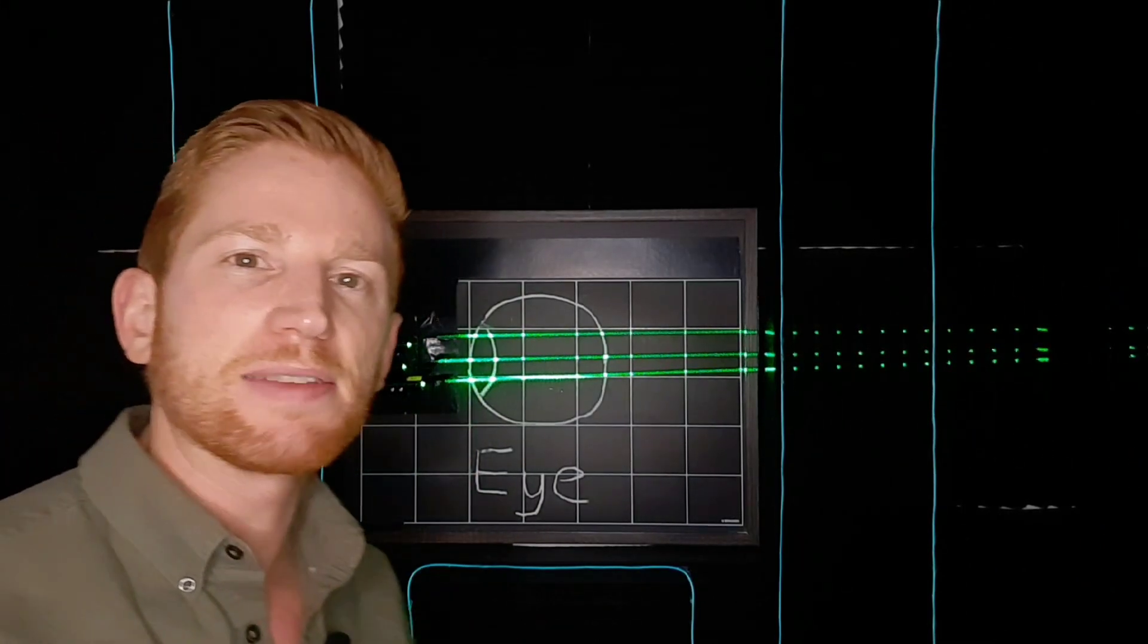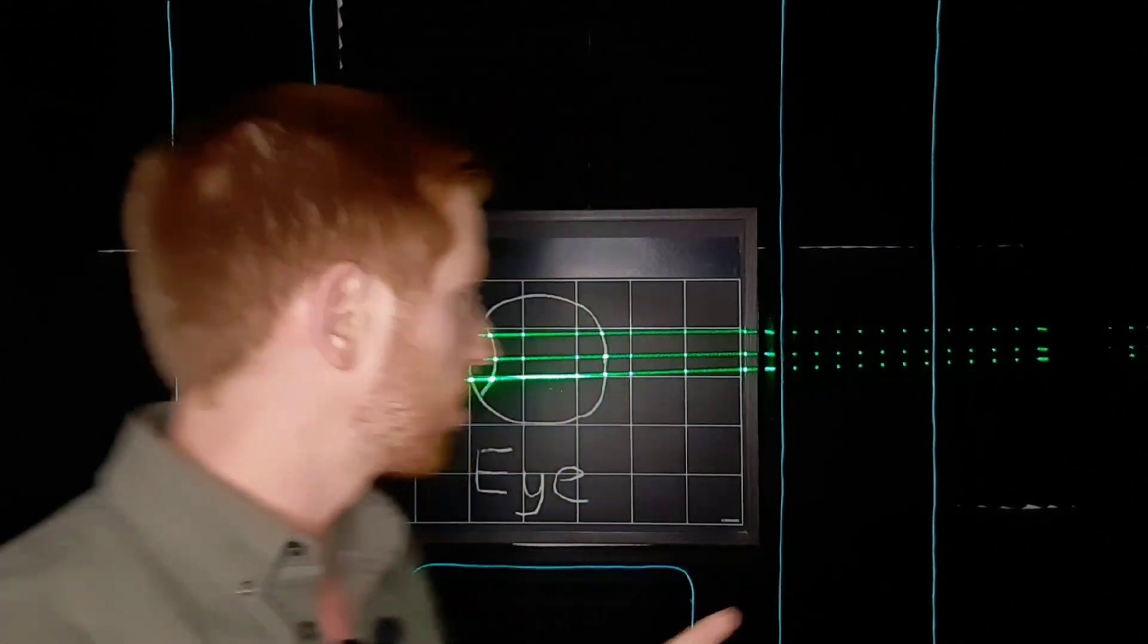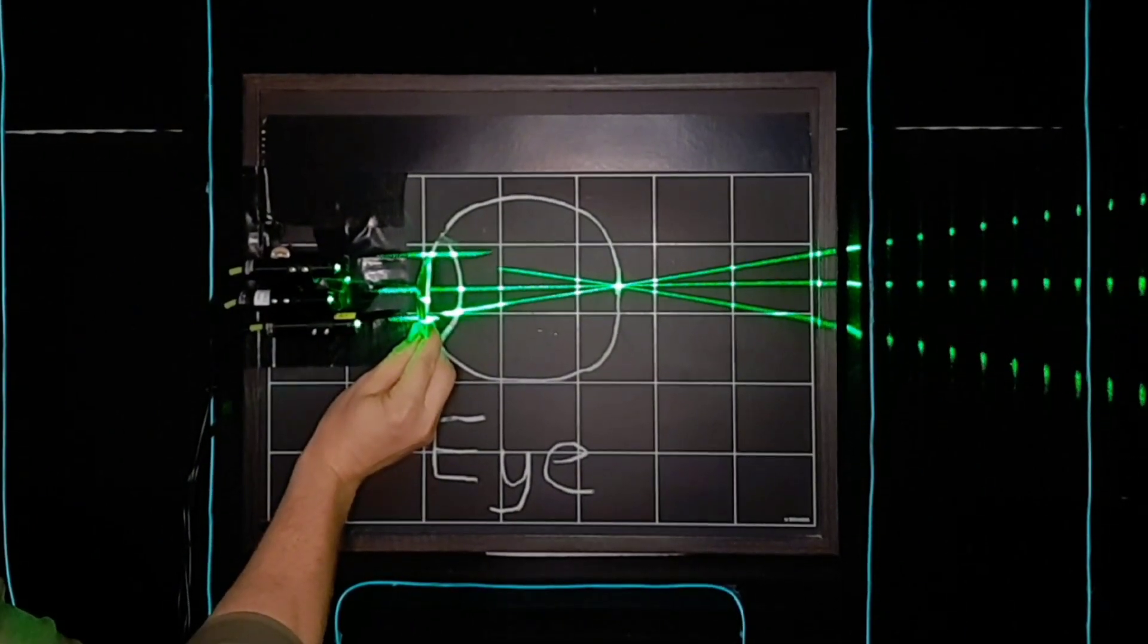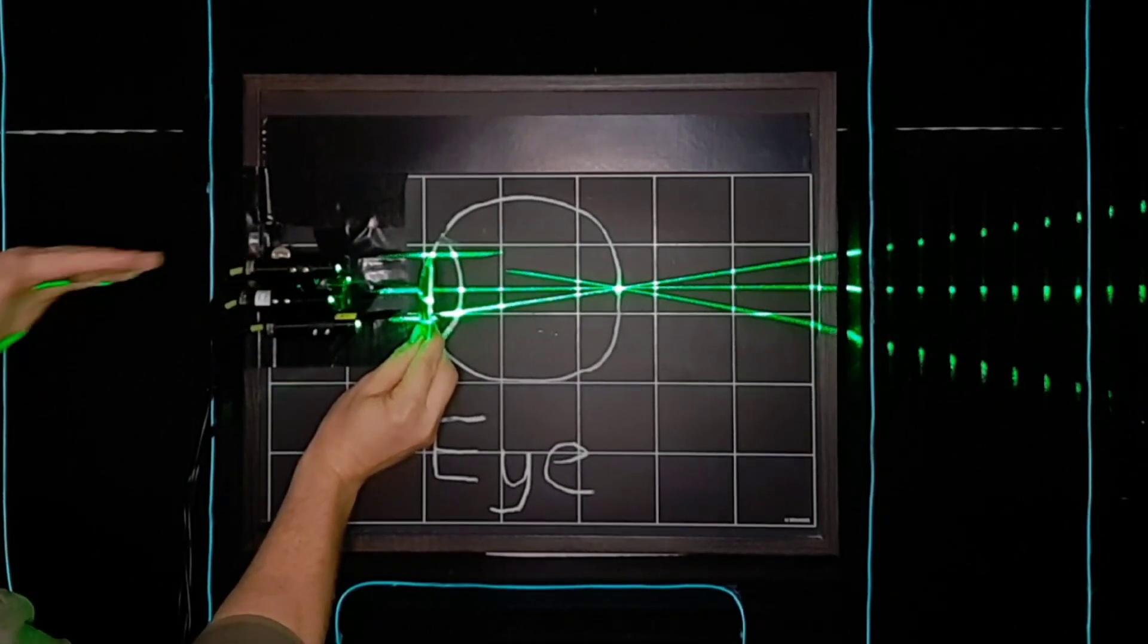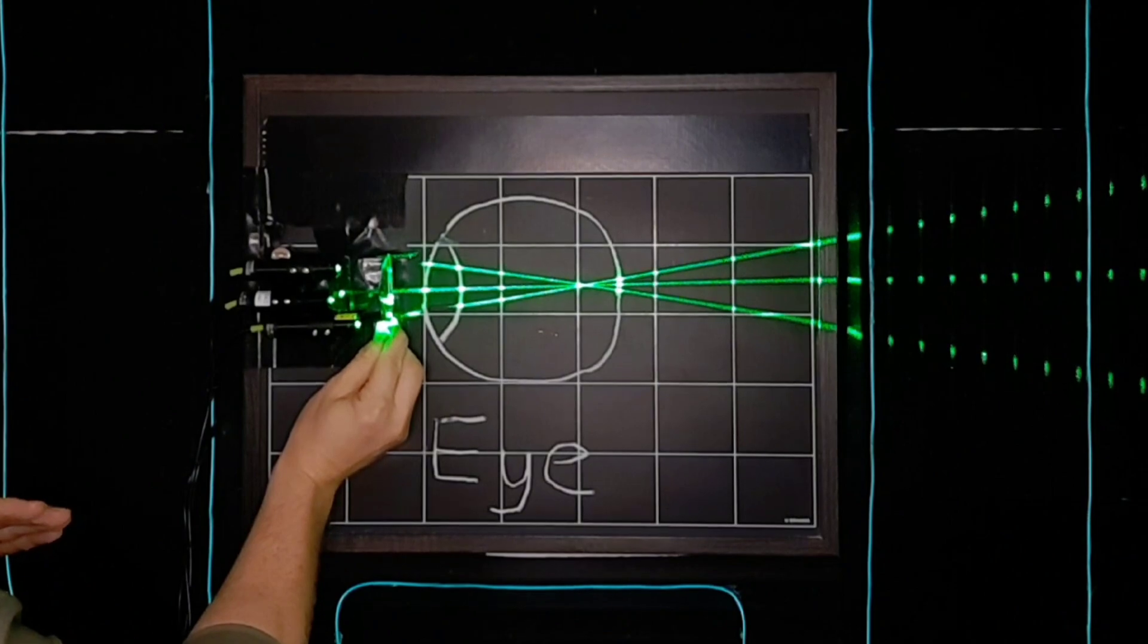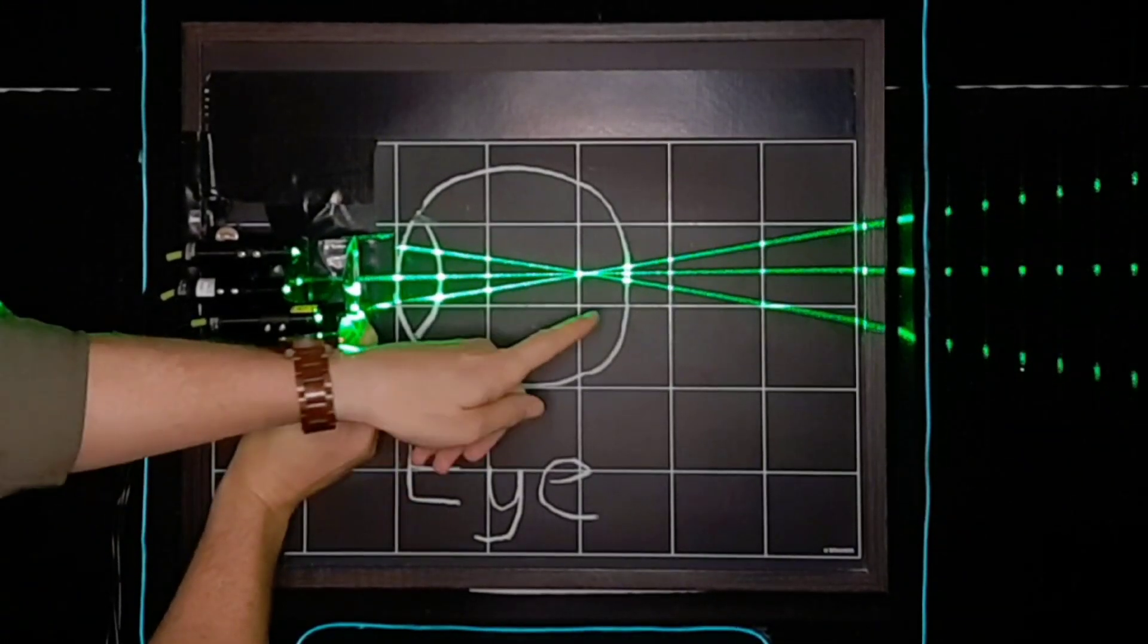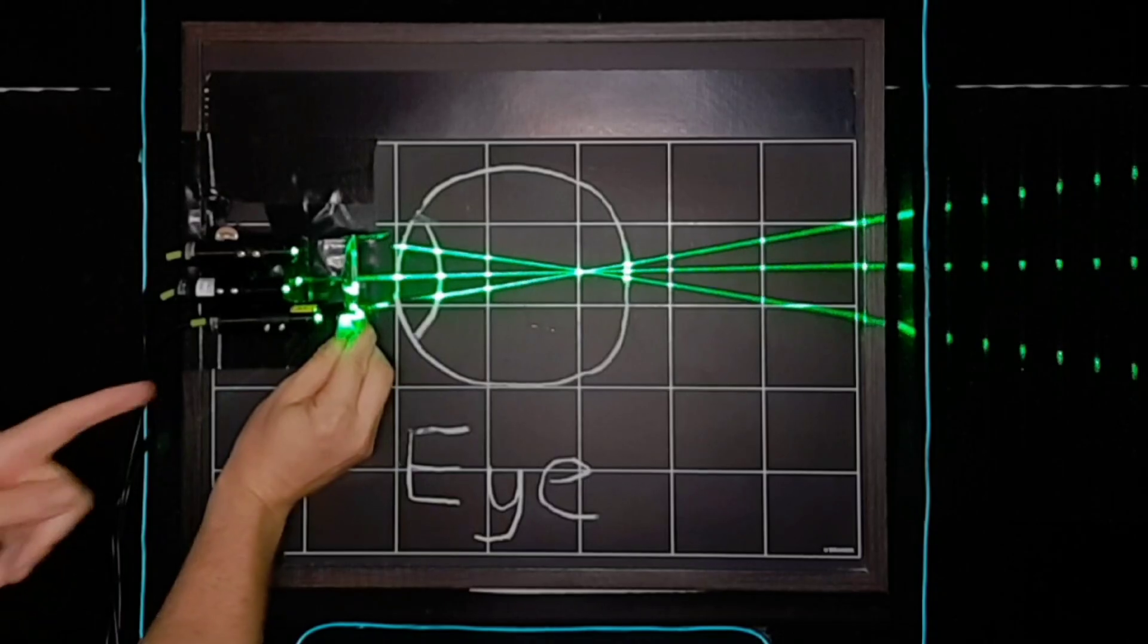But again, astigmatism means that your eye is not bending light the same way in different directions. So maybe the vertical part of your eye could be working as it should, focusing light onto the retina. But then the horizontal part of your eye could be nearsighted, focusing the light too soon. You can see here that that point of focus was moved up into the eye.